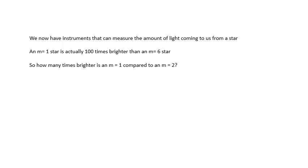So if m equals one is 100 times brighter than m equals six, how many times brighter is m equals one compared to m equals two? The answer is 2.51 — this is called Pogson's ratio. Because 2.51 to the power of five equals 100. So m equals one is 2.51 times brighter than m equals two, m equals two is 2.51 times brighter than m equals three, and so on. We call these orders of magnitude. It's not a linear scale.